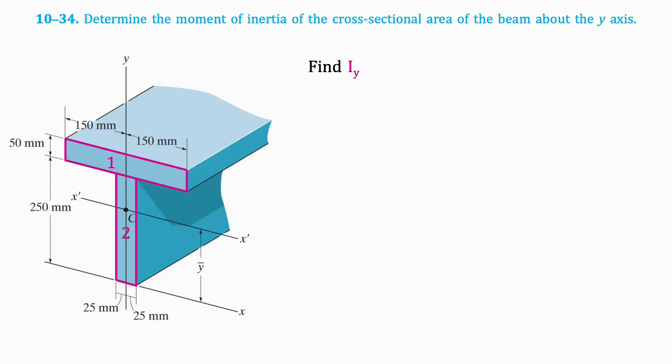We'll use the following formula to find the moment of inertia of the shape, which means we have to find the area and distance from the centroid to the y-axis of each section. We will call that distance dx.